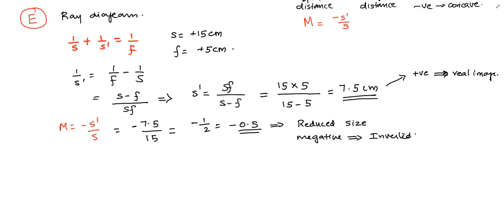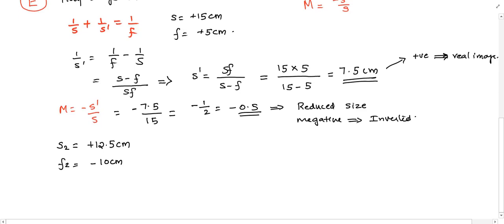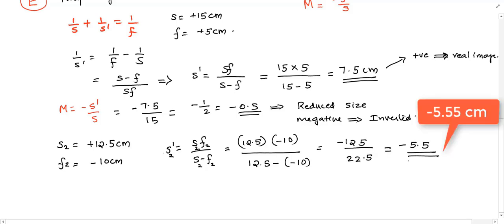Now this image is acting as the object of the second lens and is located at 12.5 cm from the concave lens. The object distance of the second lens is +12.5 centimeters, so s₂ = 12.5 cm. The focal length of the concave lens is negative, f₂ = -10 centimeters. So the image distance is s'₂ = s₂f₂/(s₂ - f₂), which when putting the values becomes -5.5 cm. The negative means it is a virtual image confirming our ray diagram.